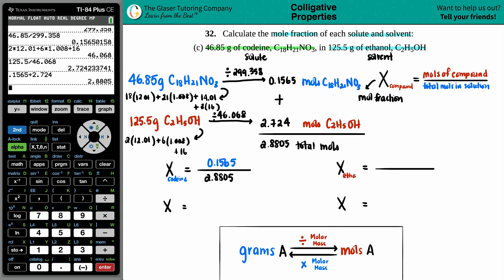And then for the ethanol, the ethanol moles was 2.724 divided by the total which was 2.8805. So this is the mole fraction of the ethanol and this is the mole fraction of the codeine.